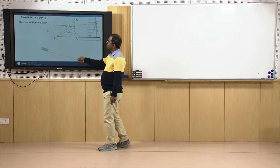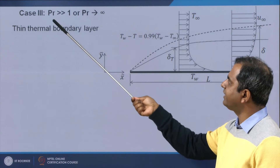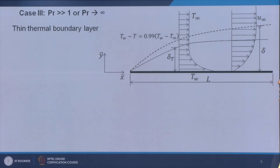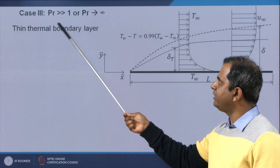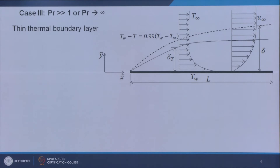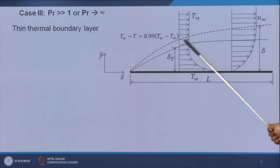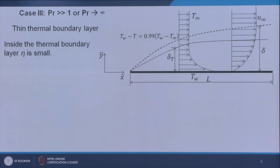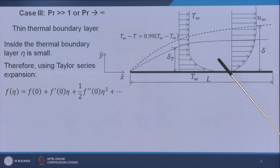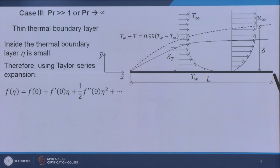In this lecture we start with high Prandtl number cases, where Pr >> 1 or Pr → ∞. This corresponds to a thin thermal boundary layer, where δ_t is smaller than the velocity boundary layer thickness δ. The velocity boundary layer profile and thermal boundary layer profile with the dotted line are shown respectively; the concept has already been discussed.